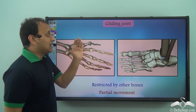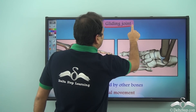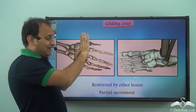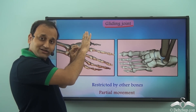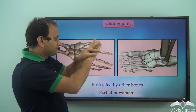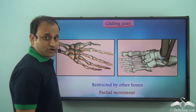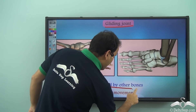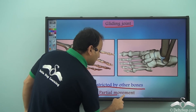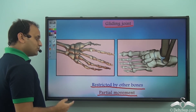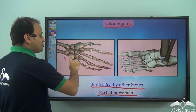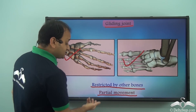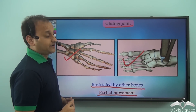These are also called gliding joints. As you saw, the bones were gliding and then they get locked against each other. They are restricted by other bones and they are partially movable joints. So in the case of the palm and feet, we have gliding joints, which are partially movable joints.